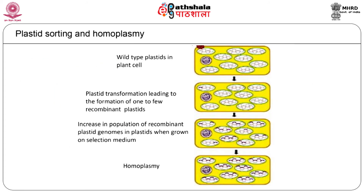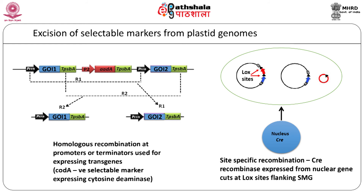With so many plastid genomes in a plastid and so many plastids in a cell, it is important to select for transplastomic cells that have only recombinant plastids. This is achieved by subjecting the cells to repeated selection such that non-transformed plastids are not able to multiply and are hence lost from the plastid population in cells. About two rounds of selection are sufficient to get homoplasmic cells carrying only the transformed plastids. The selectable marker plays an important role in achieving homoplasmy.